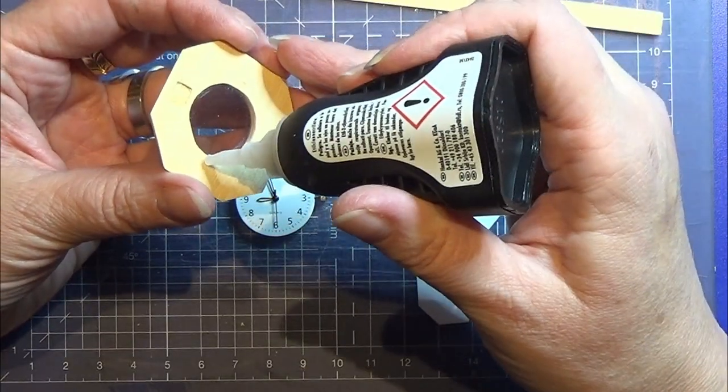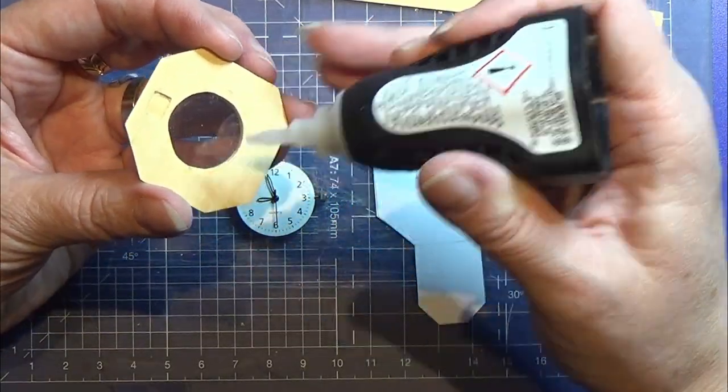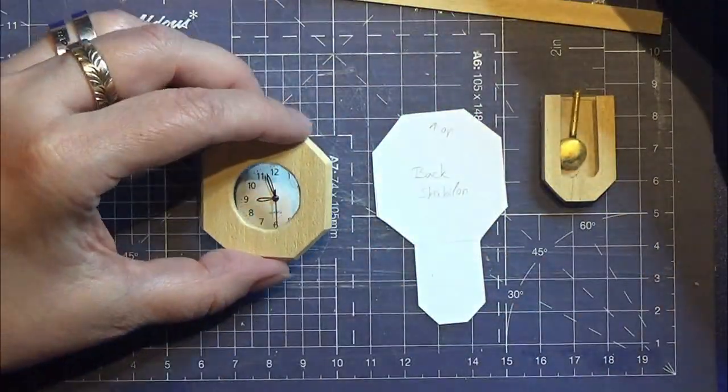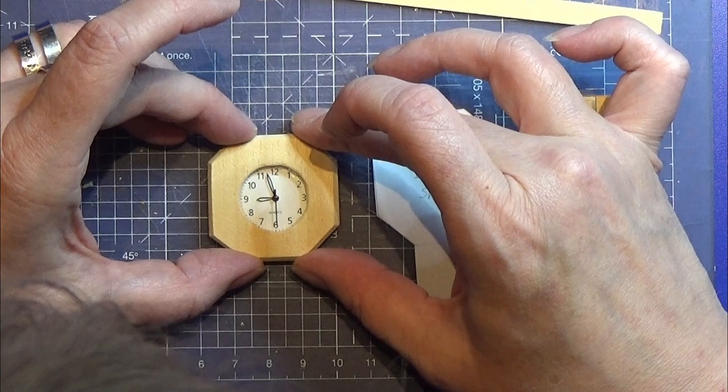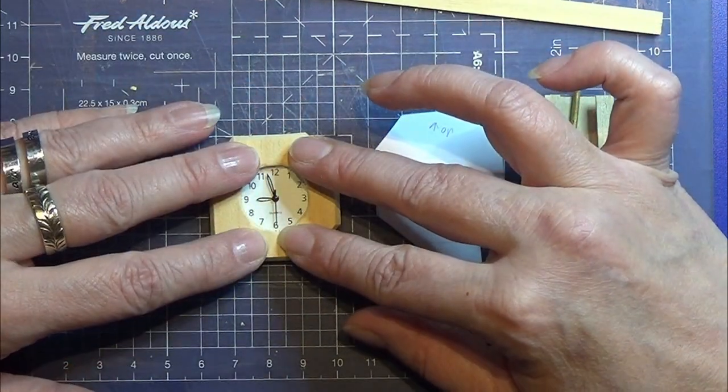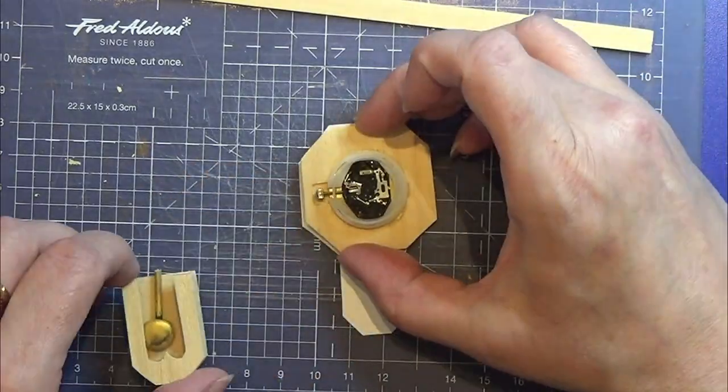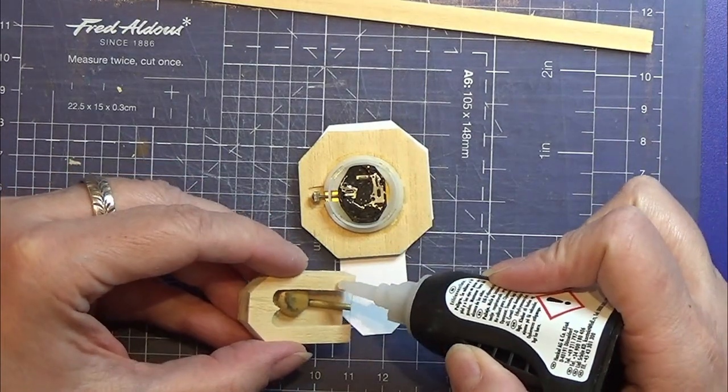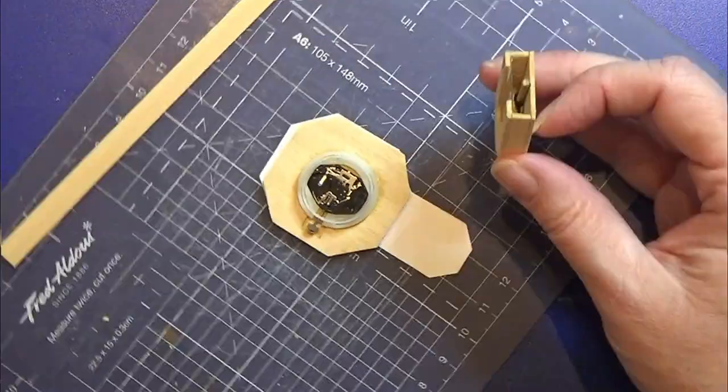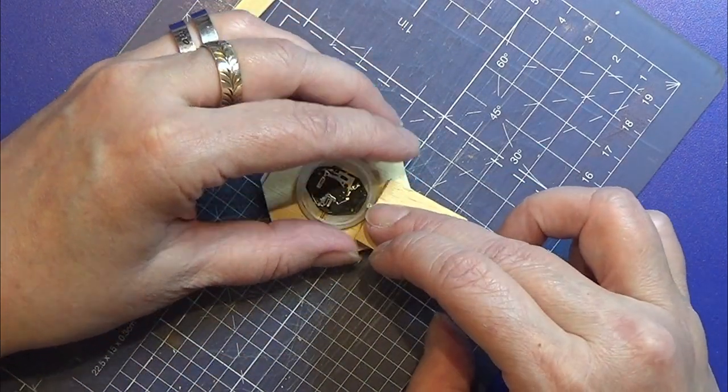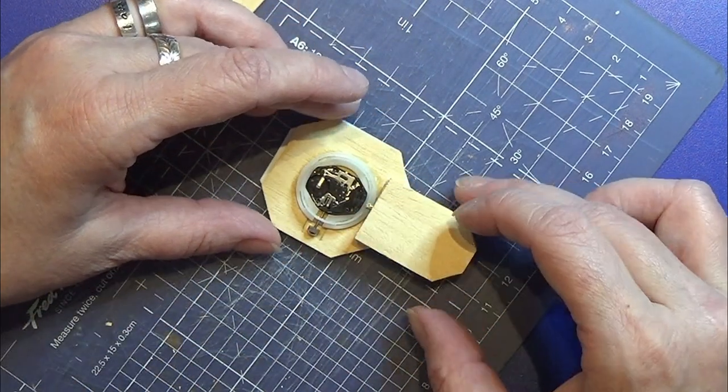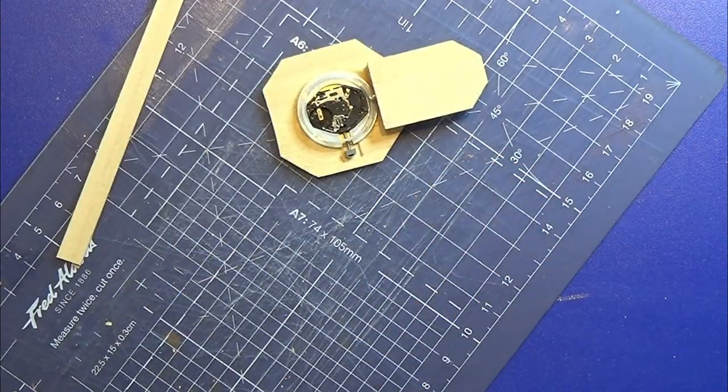I glue the clock where it needs to go so it sits nice and secure. We don't want it to break if it falls down or something else. I made sure that the clock was working like I wanted it to, and now it's time to put the things together. Make sure your clock face and this little pendulum is in the right spot before you glue them together.